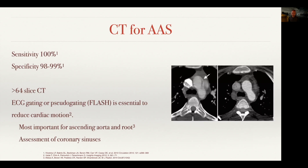CT for acute aortic syndrome is well established. This study looks at using ultra-high pitch — what we call pseudo-gating or flash CT angiography — to minimize motion in the ascending aorta. The same patient was scanned a number of hours apart, showing what looks like a dissection tear in the ascending aorta, but clearly not one on subsequent imaging. This patient basically had motion artifact misinterpreted as a dissection flap. This can be a very stressful diagnosis to make, and so you want to use all the technology available to optimize imaging.